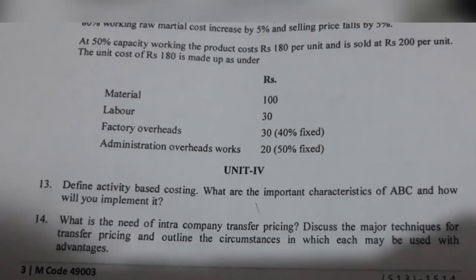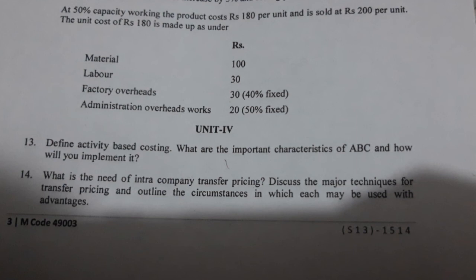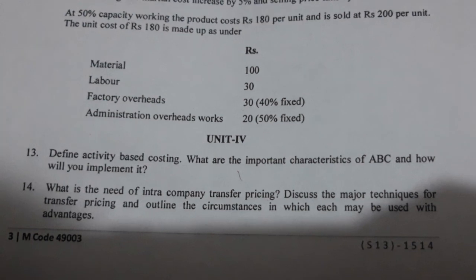Unit 4's first option was: define activity based costing, what are the important characteristics of ABC, and how will you implement it? The alternate option was: what is the need for intra-company transfer pricing? Discuss the major techniques for transfer pricing and outline the circumstances in which each may be used, along with the advantages.